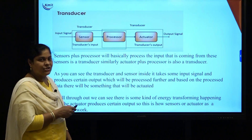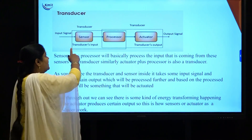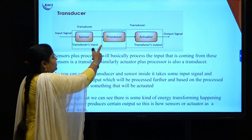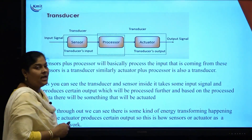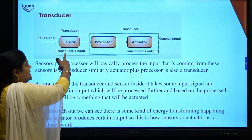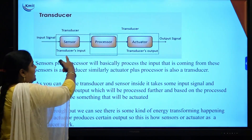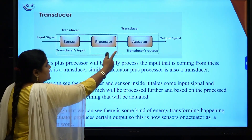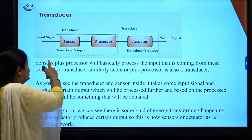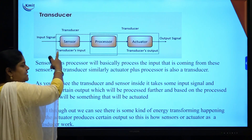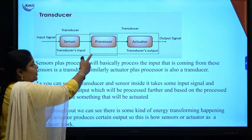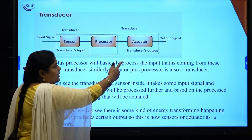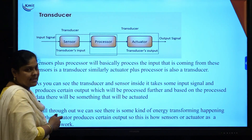To understand the transducer, we will look at this diagram. The diagram consists of a transducer as a sensor, a processor, and a transducer as an actuator. From this diagram, sensor plus processor acts as a transducer, and actuator plus processor also acts as a transducer. The sensor takes an input signal from the outside environment, processes it, and sends it to the actuator, which then produces the output signal.